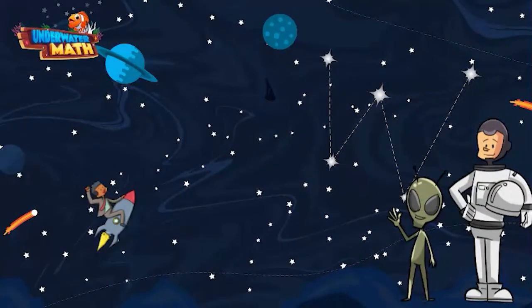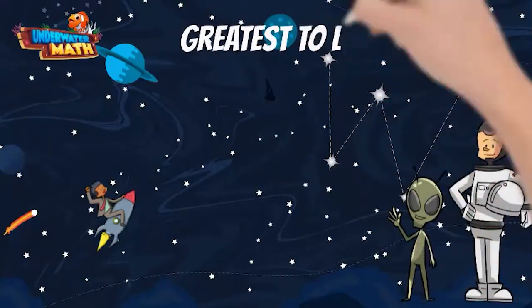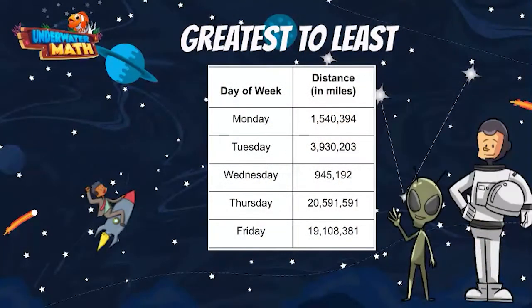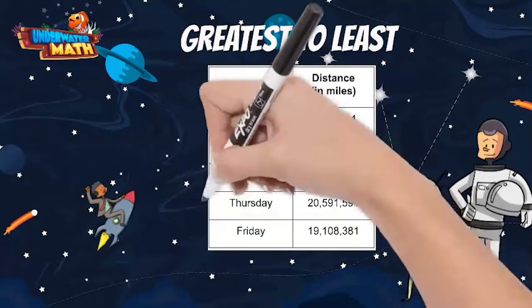Let's try one more example. This time, we are going to order numbers from greatest to least. This table shows us how many miles Marcus went on his rockets each day. Which day did Marcus travel the greatest number of miles? That's right, Thursday.